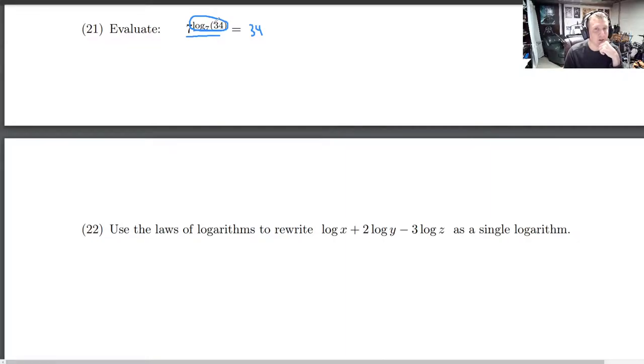So when you plug the power of 7 that gives you 34 into the power of 7, you get 34. It's literally by definition. So this one's too easy. It's just 34.